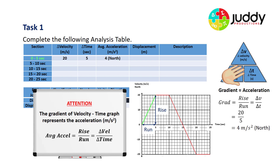Let's do our calculation: 20 meters per second divided by five seconds gives us a gradient and an average acceleration of four meters per second squared in the northerly direction. This is going upwards, and everything upwards on this velocity-time graph represents north.